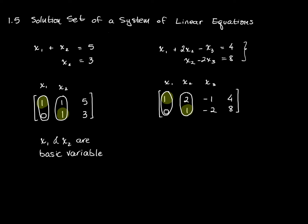In the second system, x sub 1 and x sub 2 are both associated with pivot columns. So they are basic variables.